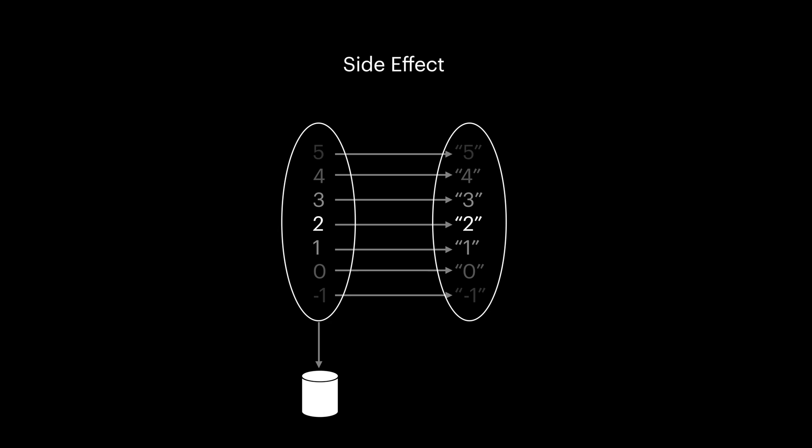You may ask, then how can we create useful applications if we are not allowed to do side effects? The short answer is: in functional programming we try our best to keep the body of our functions pure and only have a thin layer outside of our application responsible to do side effects.